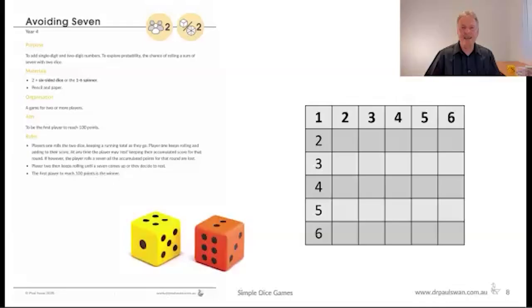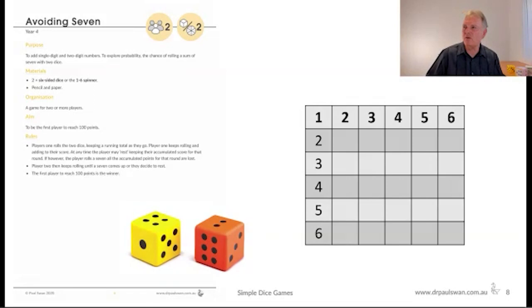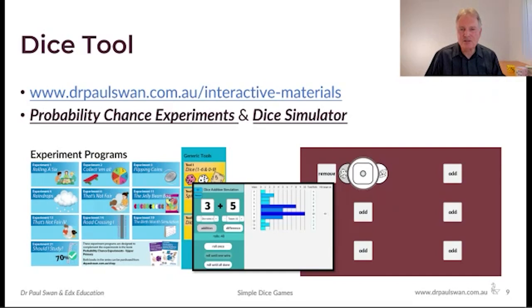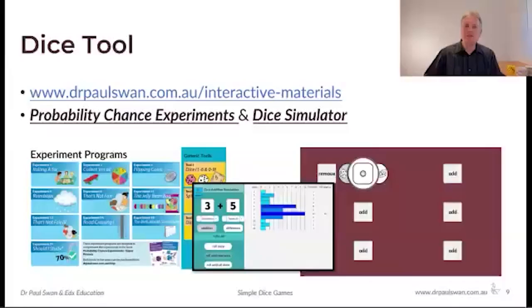For people who might not have any dice or be in lockdown, we've programmed a dice simulator on our website. Go to the probability interactive materials, click a button, and the dice will spin - there's a six-sided and ten-sided option. There's also an interesting simulation showing that seven comes up a lot when you add two dice. Children can play on an iPad, and it's useful to see what happens if you rolled a thousand times.